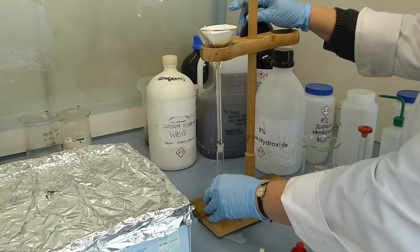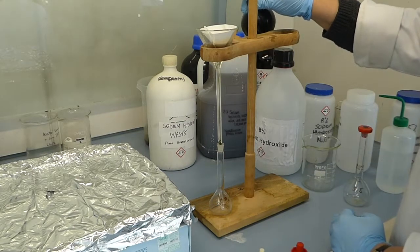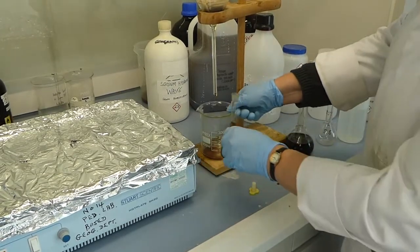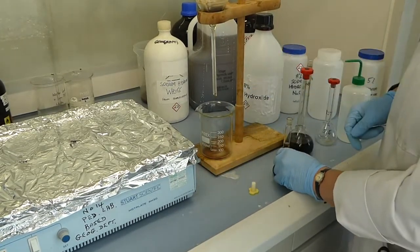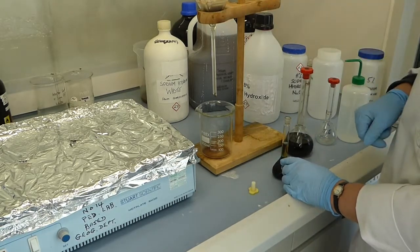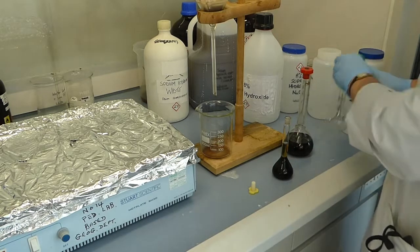Again, make sure that you've got the funnel aligned. You don't want it sitting in the flask, but sitting just above. You need to be careful that you stop at 50 ml. If you've still got excess solution in the funnel, just put a beaker underneath and catch the rest.